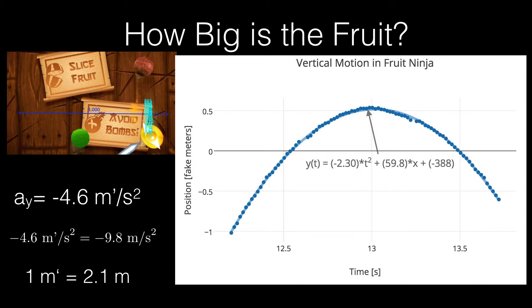I can plot an equation that fits the data, and I get it right here in the graph. And you see the term in front of t squared is negative 2.3. If you go back to the kinematic equation, that should be one-half the acceleration. So the acceleration would be twice that. And I get an acceleration of negative 4.6 meter primes per second squared.